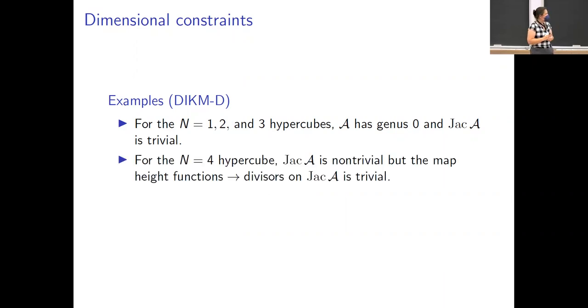For n equals four, we get a non-trivial Jacobian. We get an elliptic curve. But unfortunately, all the height functions still map divisors to the identity of the elliptic curve. So we still don't have any exciting information.